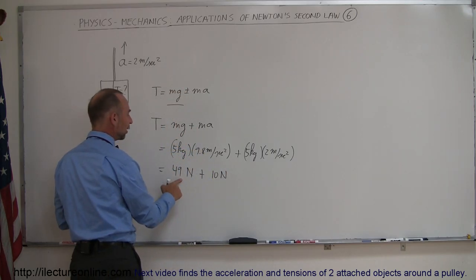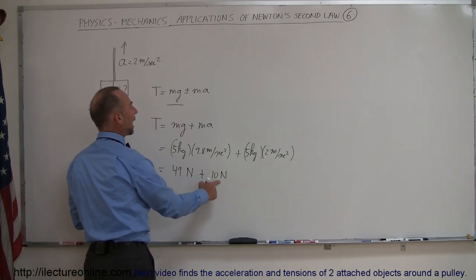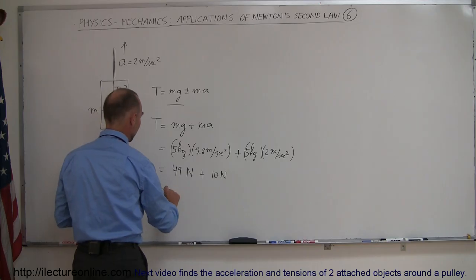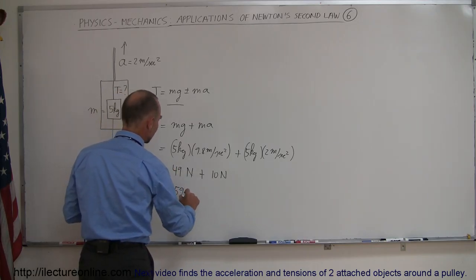So this is the weight of the object, and this is the force required to accelerate a 5 kilogram object at 2 meters per second squared for a total force required or a total tension of 59 newtons.